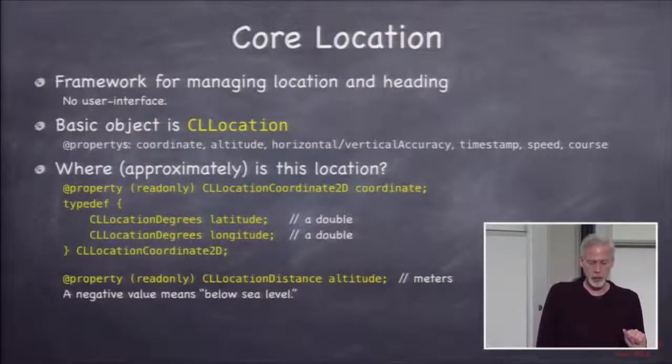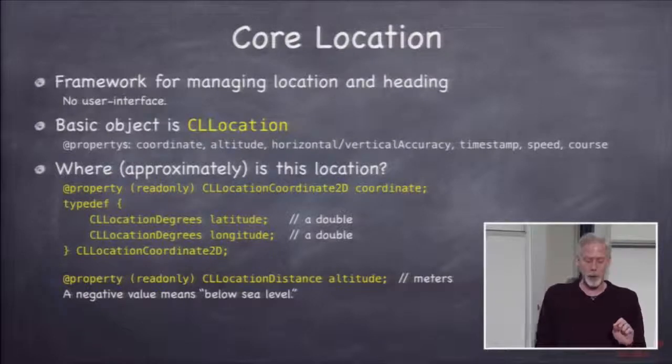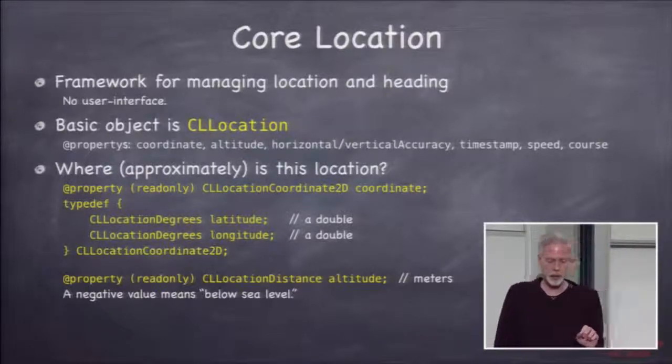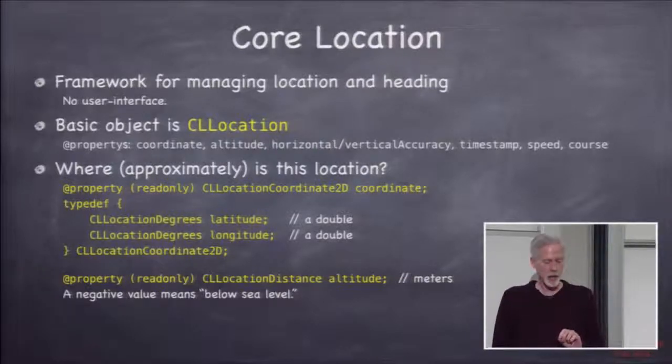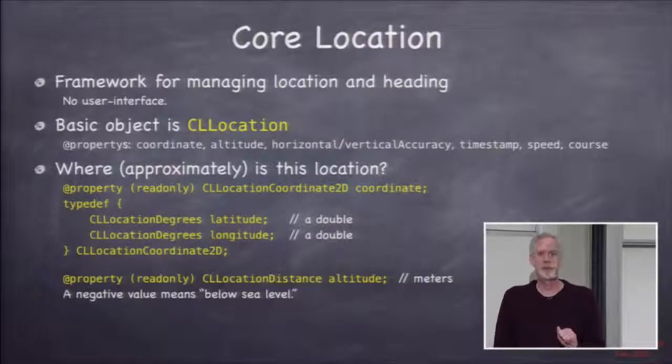This object has this very important property called coordinate and that is a C struct, CLLocationCoordinate2D, and inside is just CLLocationDegrees, which is essentially a double, which is latitude and another one is longitude. And then the altitude is in meters.